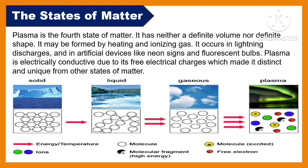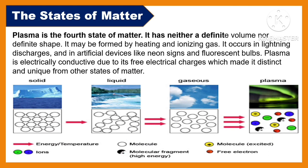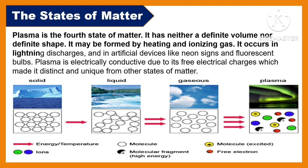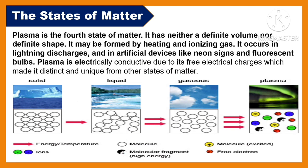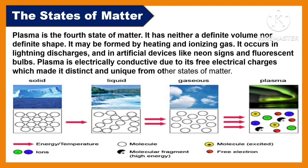Plasma is the fourth state of matter. It has neither a definite volume nor definite shape. It may be formed by heating and ionizing gas. It occurs in lightning, electrical discharge, and in artificial devices like neon signs and fluorescent bulbs. Plasma is electrically conductive due to its free electrical charges, which makes it distinct and unique from other states of matter.